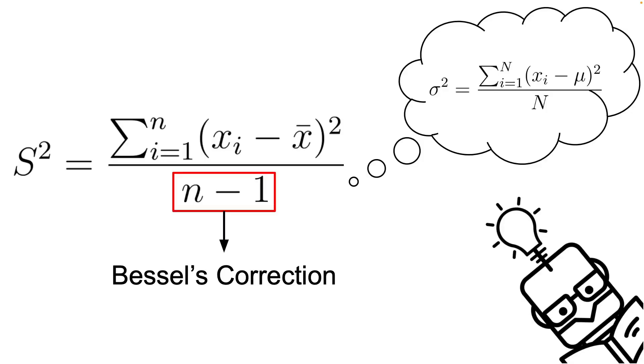Hi everyone, this is YML and today we are going to talk about bias correction that appears in the variation formula, known as the Bessel correction. To be more precise, we'll explore when and why we divide by n-1 instead of n in the equation which calculates the sample variance.